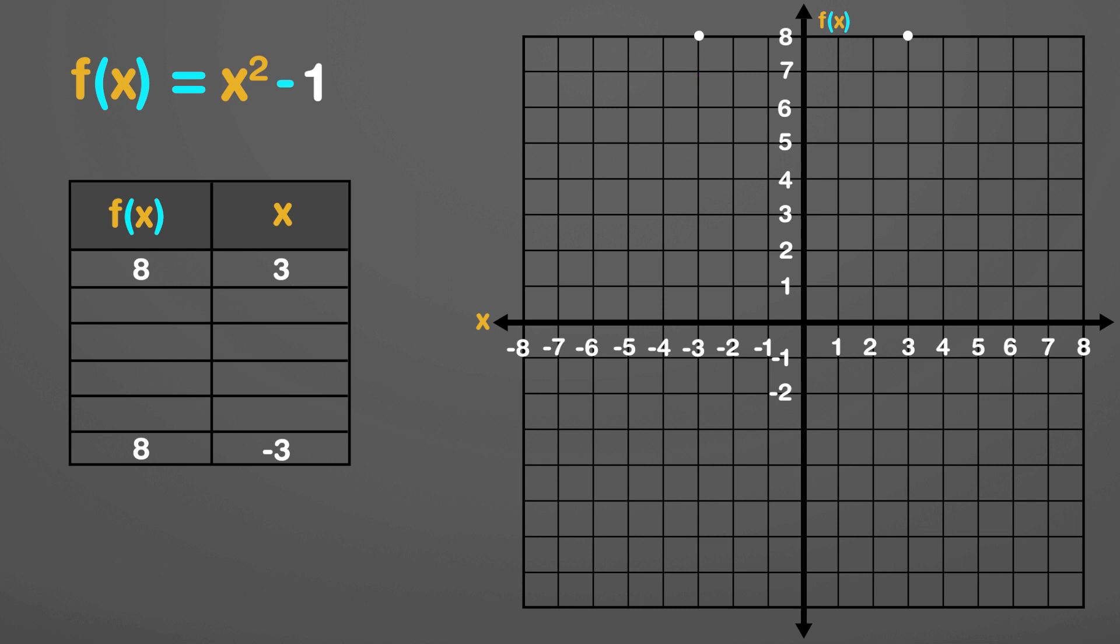Similarly, for x equal to 2 and minus 2, the output f becomes 3. And for x equal to 1 and minus 1, the output is 0.